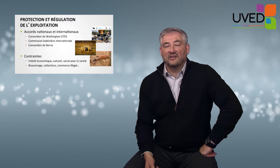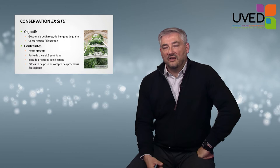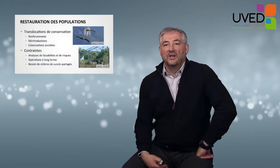Some people want to collect these species, and the greed is sometimes such that it leads to armed conflict in some African countries. For the most endangered species, we also perform ex-situ conservation outside of the natural habitat — preserving plants in special gardens and animals in zoos to manage their pedigrees, set up seed banks, and educate the population. However, this presents logistical problems: only small populations can be preserved, leading to loss of genetic diversity, and it is difficult to maintain animals in captivity away from natural constraints.